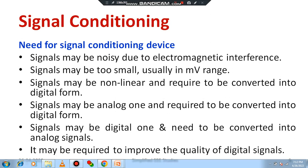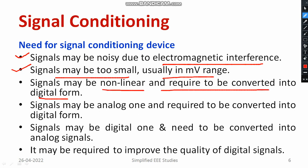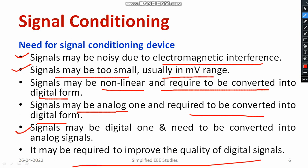Why are signal conditionings required? Signals may be noisy due to EMI — electromagnetic interference. The signal may be too small, usually in the millivolt range, which is not good enough to satisfy the requirement. Signals may be non-linear and may need to be converted into digital form. The signal may be analog, but the requirement may be digital, so you need to convert analog to digital and vice versa. It may also be required to improve the quality of digital signals in discrete form.